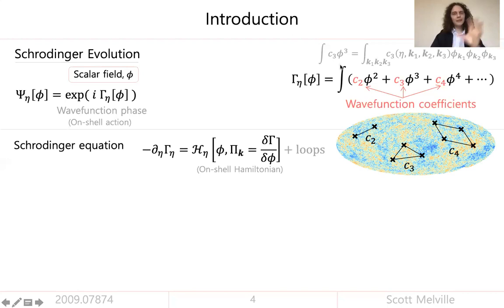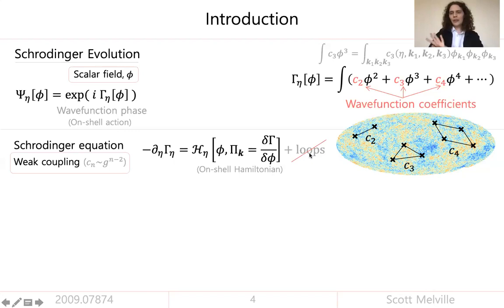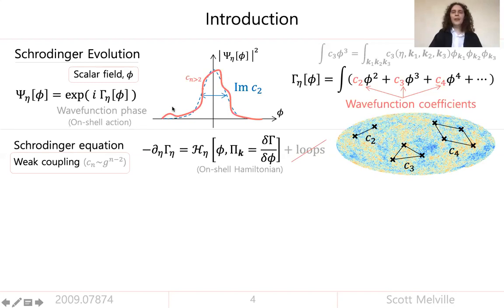How does the state evolve in time? The dynamics are given by the Schrödinger equation, which can be written as a first-order differential equation: the phase changes with time according to the on-shell Hamiltonian, where I've integrated out the momenta in terms of phi. An important technical assumption is that I'm going to work at weak coupling throughout the talk — everything is a tree-level statement where I'm ignoring loops. This means c2, the quadratic wave function coefficient, is much larger than all the others.